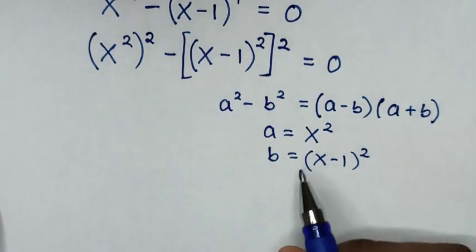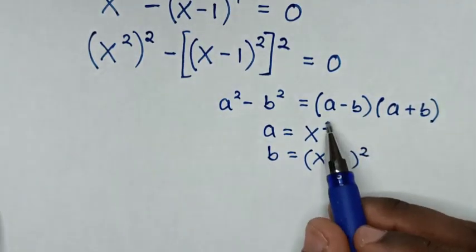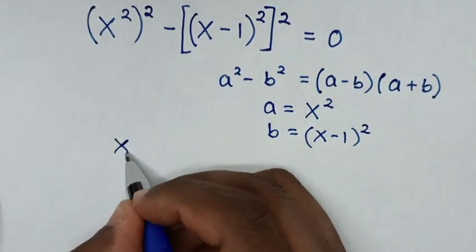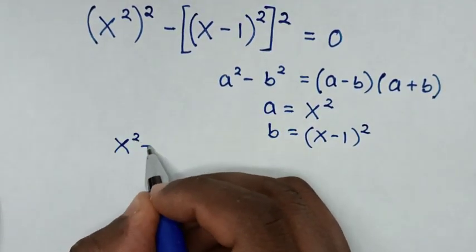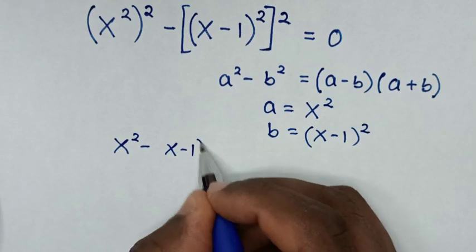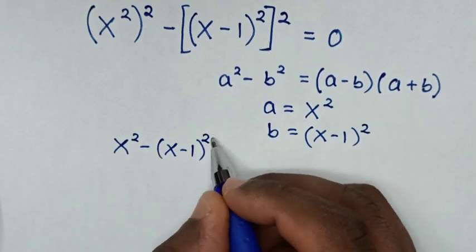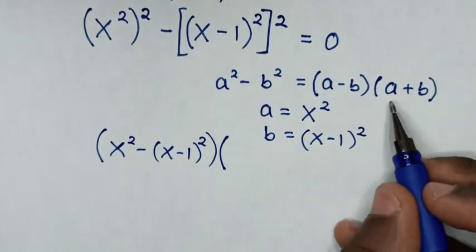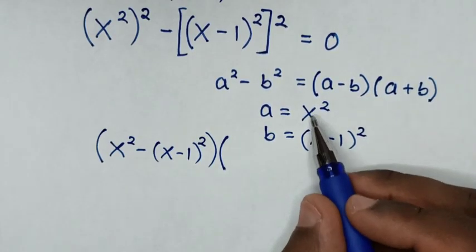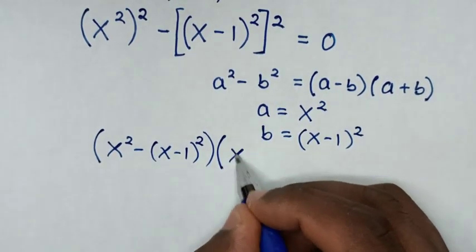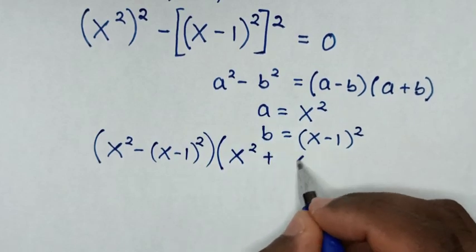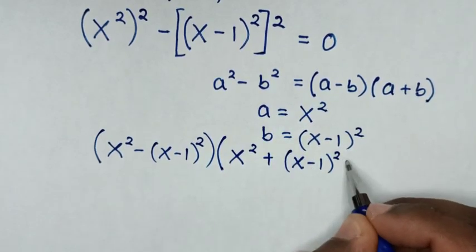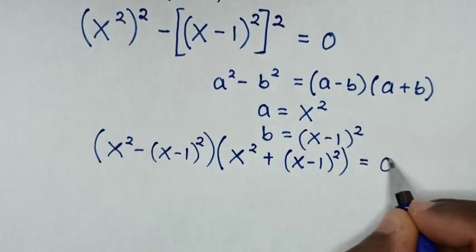So a minus b gives x squared minus (x minus 1) squared, and a plus b gives x squared plus (x minus 1) squared. So we have [x squared minus (x minus 1) squared] times [x squared plus (x minus 1) squared] equals 0.